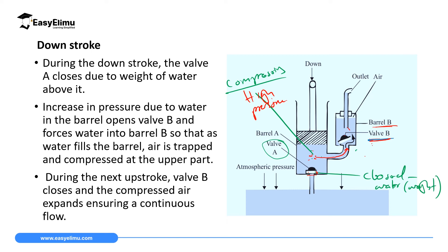Then atmospheric pressure is very high, which opens valve A and water comes inside barrel A. On the next downstroke, the water is compressed, its weight closes valve A, pressure inside becomes very high using an external force, valve B opens, and the process continues like that until your tank is full.